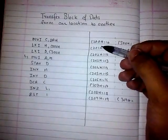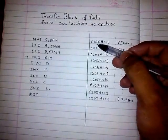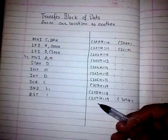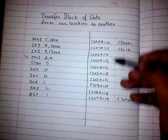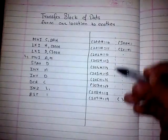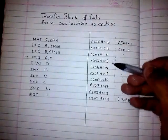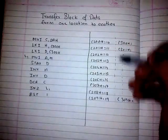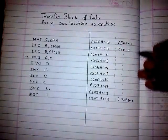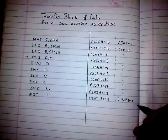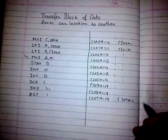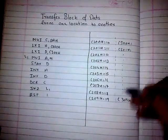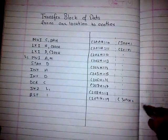Here, see this — we have memory locations C200 to C209. We have 10 data values: 10, 11, 12, 13, 14 to 19. We want to store all this data in C300 to C309. This is just like transferring this block of data over here.